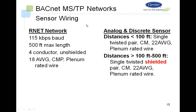For sensor wiring: the R-Net network, which operates at 115k baud, has a maximum distance of 500 feet using four-conductor unshielded 18-gauge plenum-rated wire. For analog and discrete sensors with distances less than 100 feet, use a single twisted pair 22-gauge plenum-rated wire. For distances exceeding 100 feet but less than 500 feet, use a single twisted shielded pair 22-gauge plenum-rated wire.